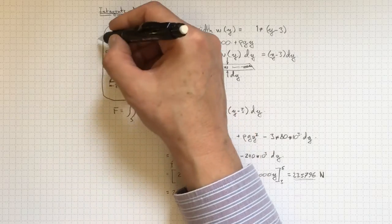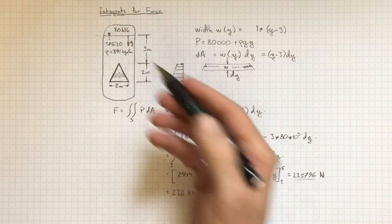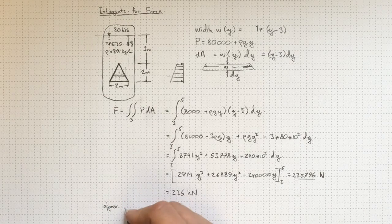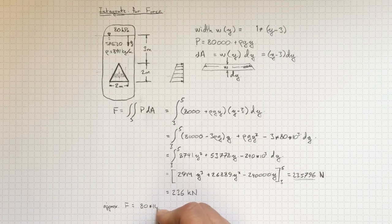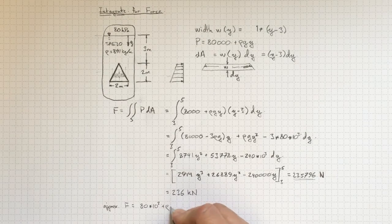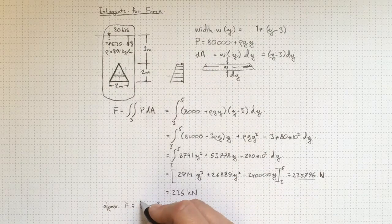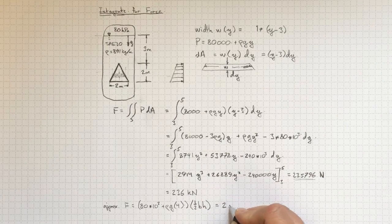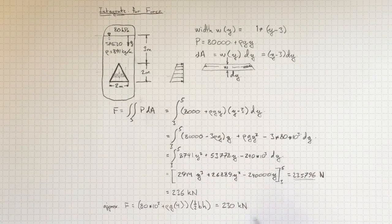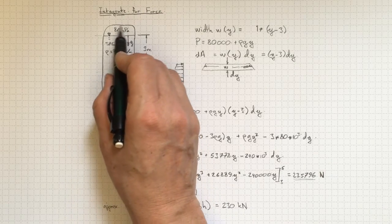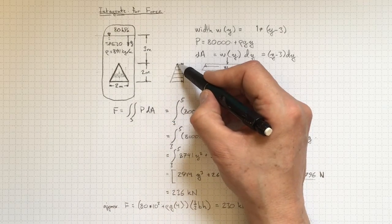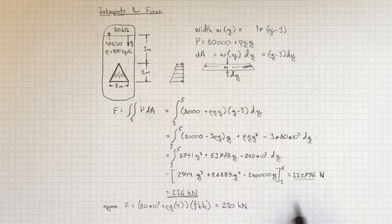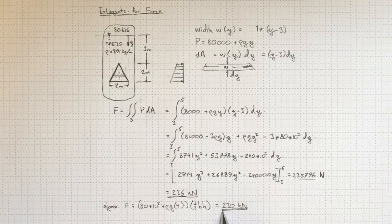Now let's compare that force to what we'd get if we just took an average pressure at, say, four meters below the oil surface. So if we took an approximation with f equal to 80 times 10 to the third, that's our 80 kilopascals, plus rho g times four, just the depth down to about the middle here, times a half base times height for a triangle. If I plug that in, I'd get 230 kilonewtons. So in this case, because most of the pressure is due to this high pressure in the air up here, and there's actually not much variation in pressure over the height, the two answers that we get, this exact answer from integrating over the entire area, and this approximate answer from just taking an average, are very close to the same value.